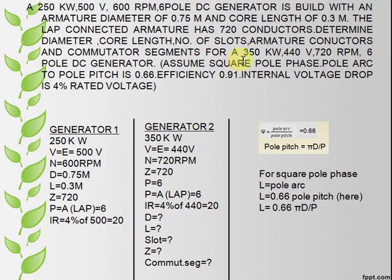350 kilowatt, 440 volt, 720 rpm, six pole DC generator. Assume square pole phase, pole arc to pole pitch is 0.66, efficiency is 0.91, internal voltage drop is 4% of rated voltage.